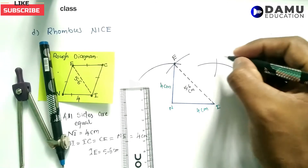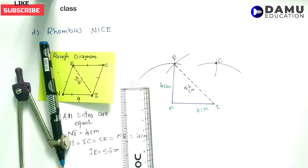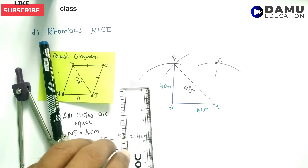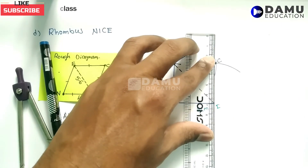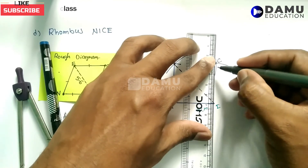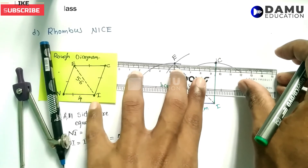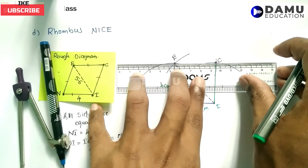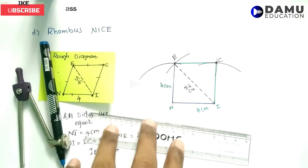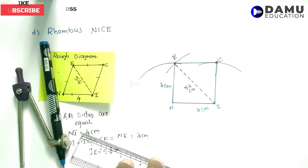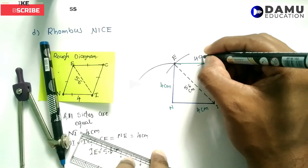This is the point where the two arcs are meeting — that point is C. So let's go ahead and join this using a ruler. This is the joining point, where we need to join all these things. This dimension is also 4 centimetres, and this also 4 centimetres.